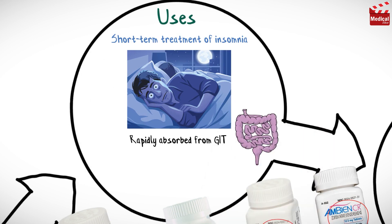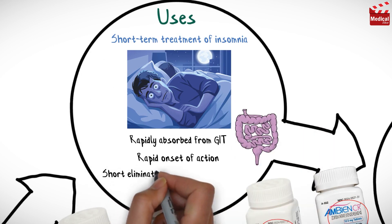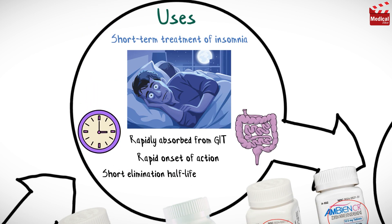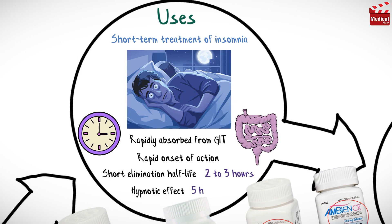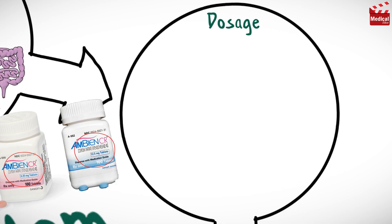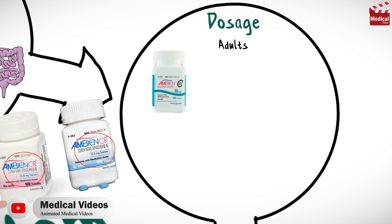It is rapidly absorbed from the gastrointestinal tract, with a rapid onset of action and a short elimination half-life of about two to three hours. It provides a hypnotic effect for approximately five hours. The usual dosage of Zolpidem for adults is 10 milligrams at bedtime.